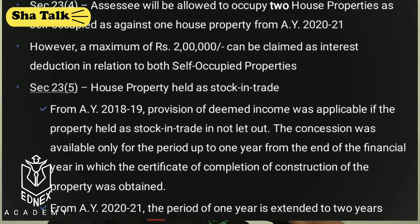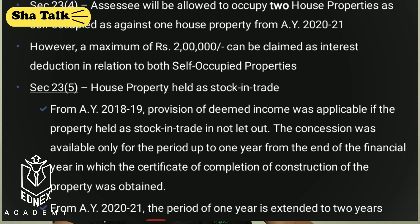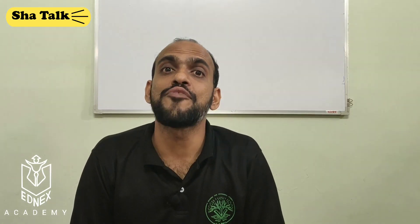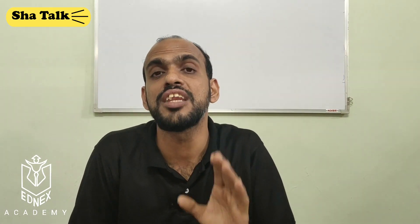The second change in house property: previously, a building held as stock-in-trade and not let out could be held without letting for up to one year from the end of the previous year in which the completion certificate was obtained. With effect from Previous Year 2019-20, you can hold such property for two years from the end of the previous year in which the completion certificate was obtained.